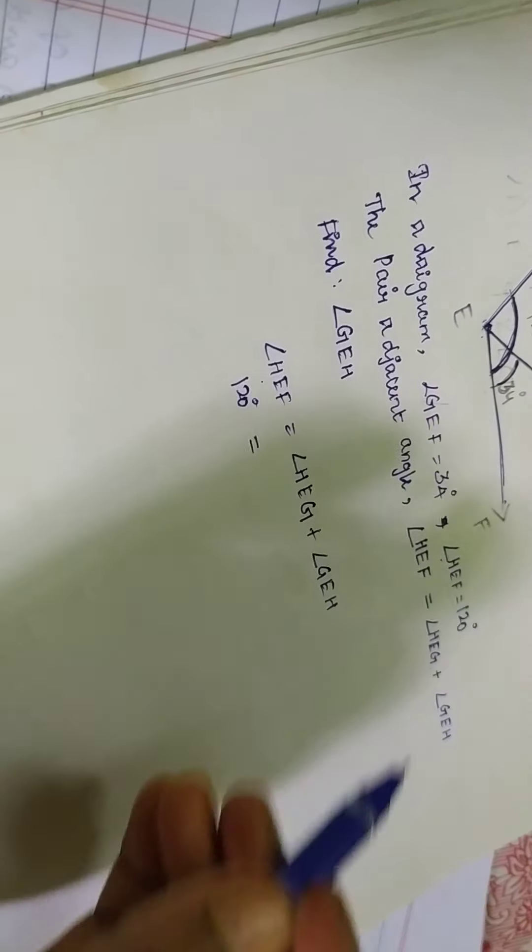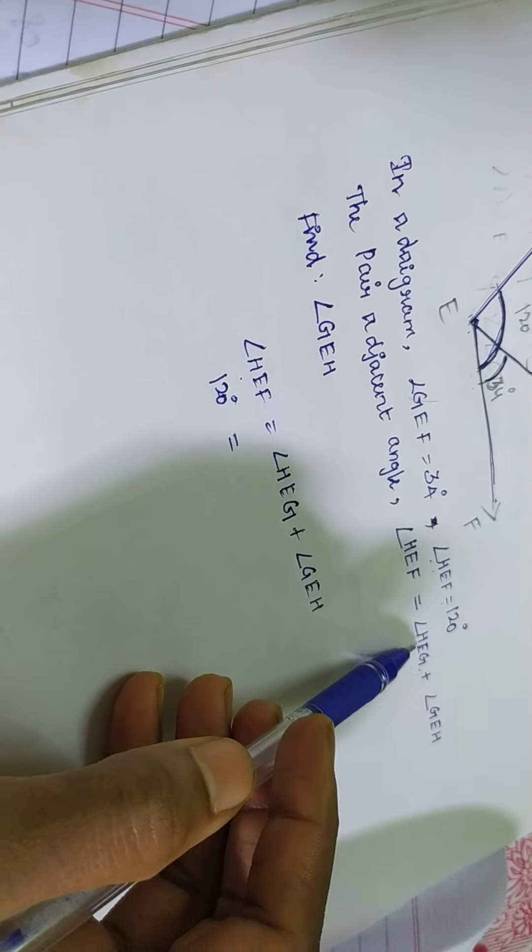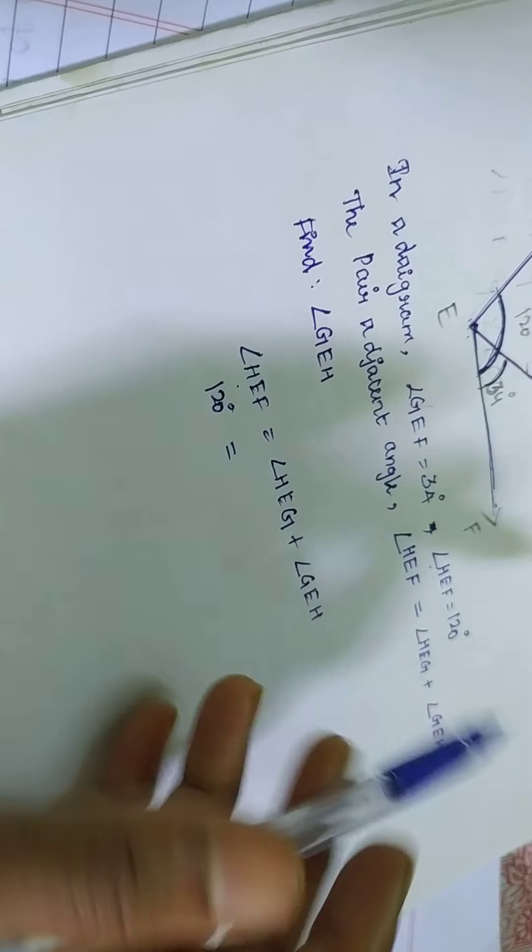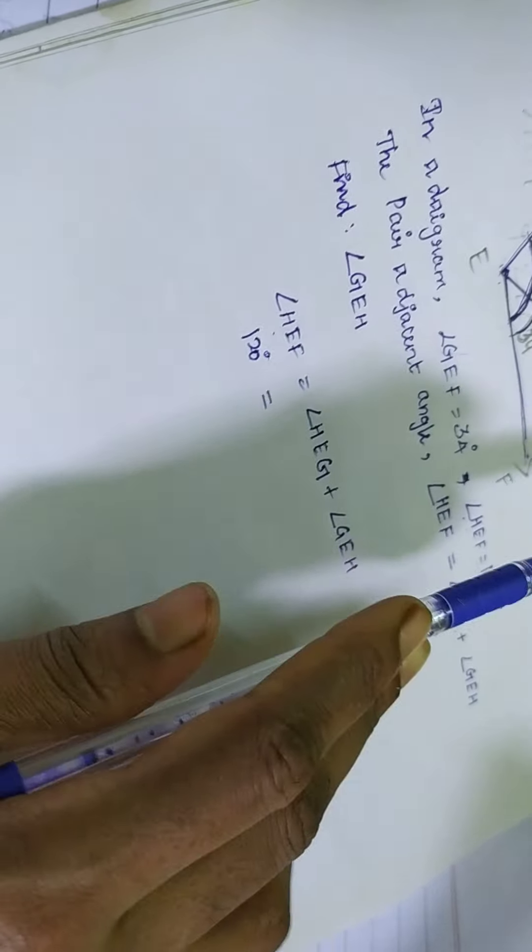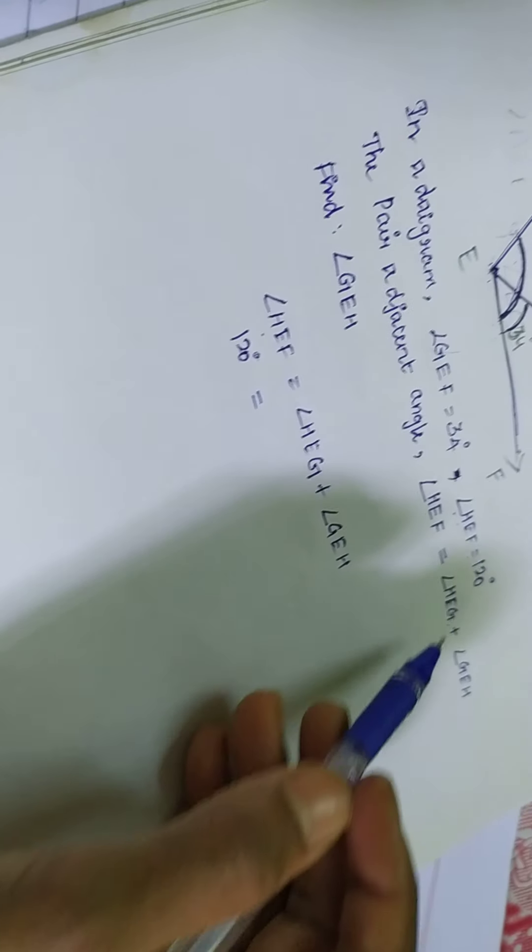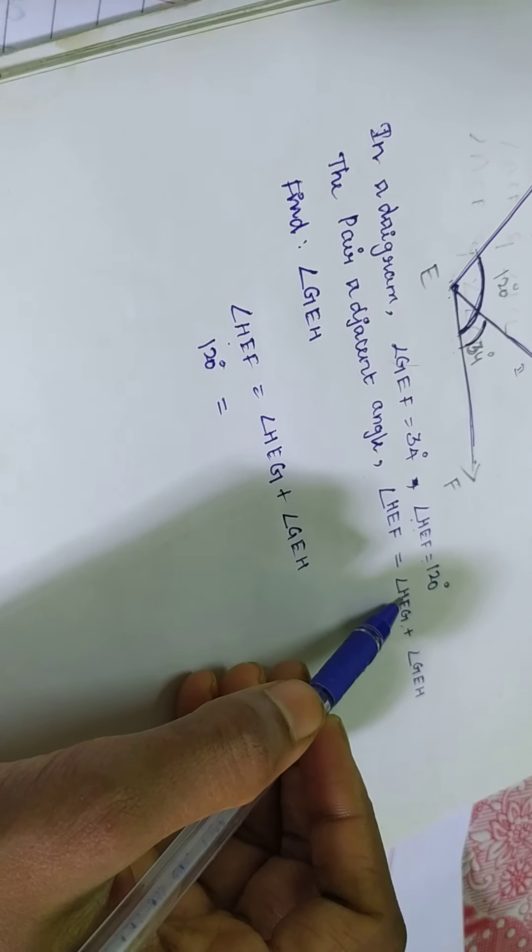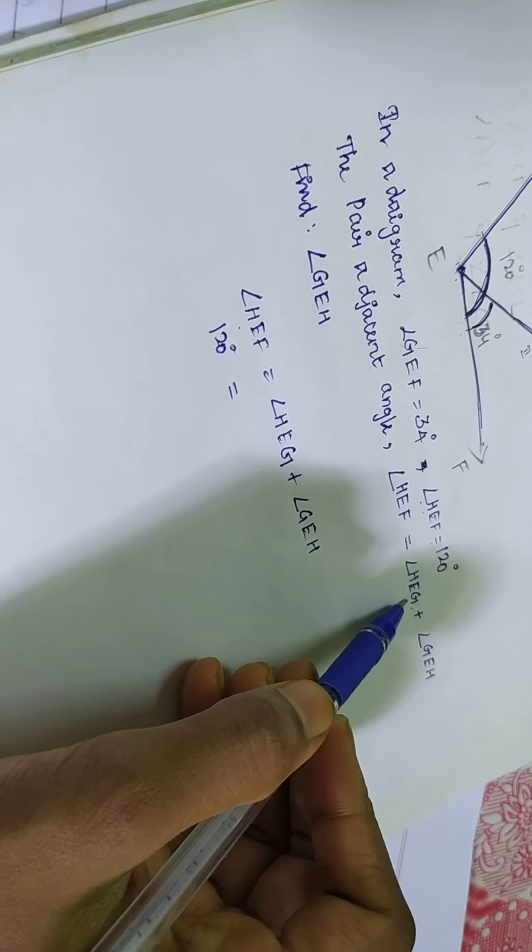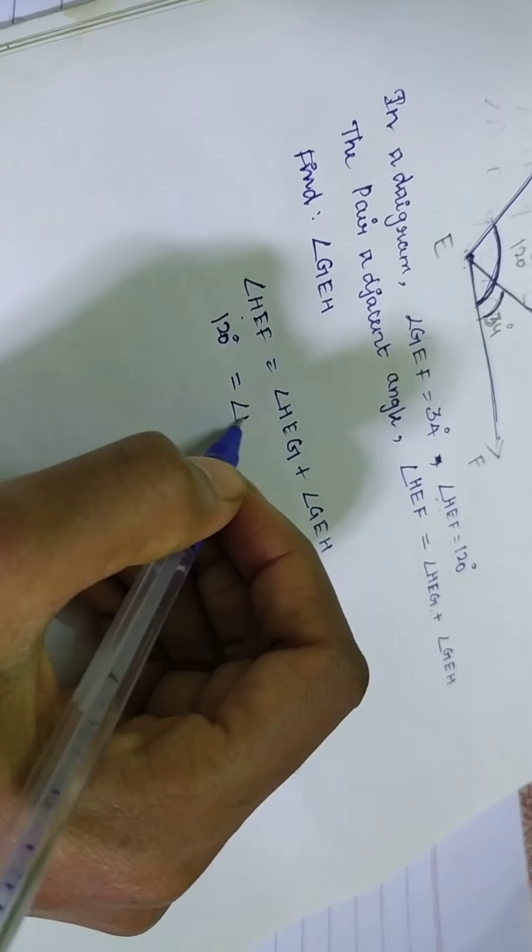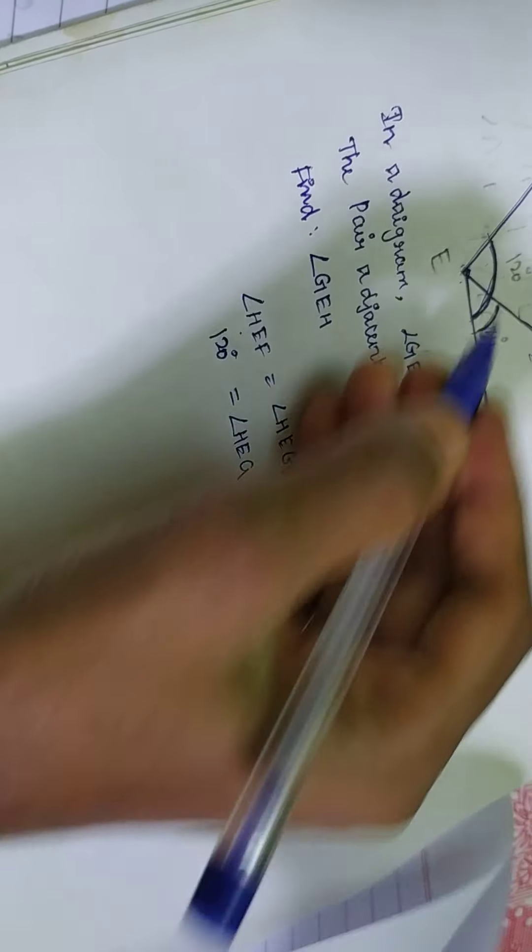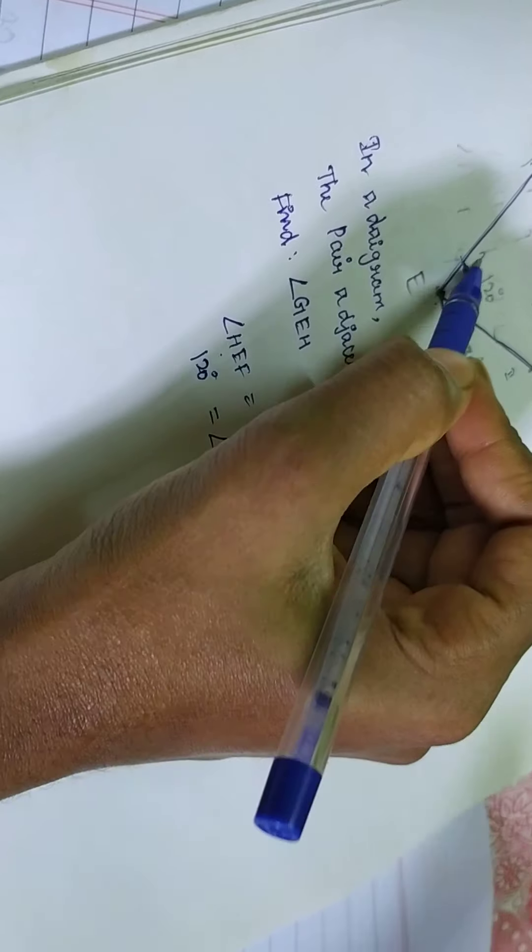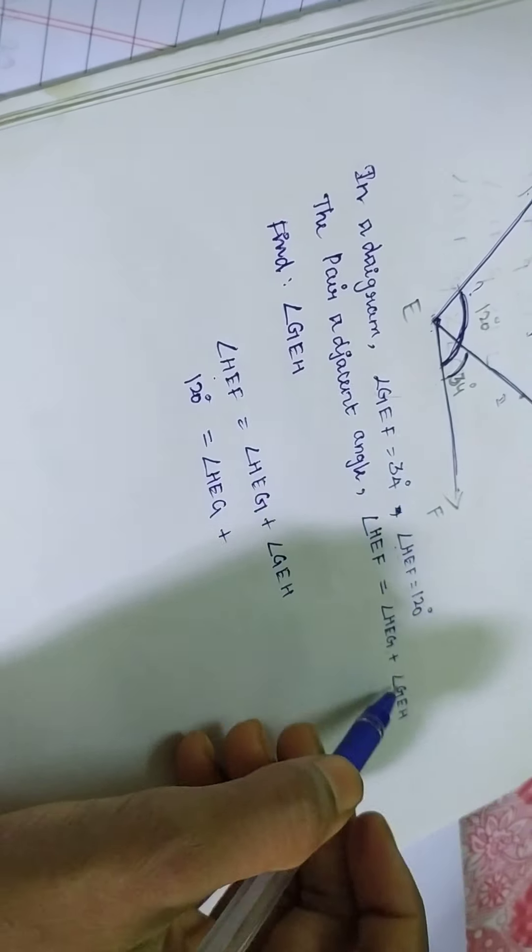Then, angle H E G. G E F also same. What is this? What am I having now? H E G. Yeah, I don't know. H E G angle means H E G. I don't have that value because total. In this place, I don't know. Right? That's why I am going to find out.